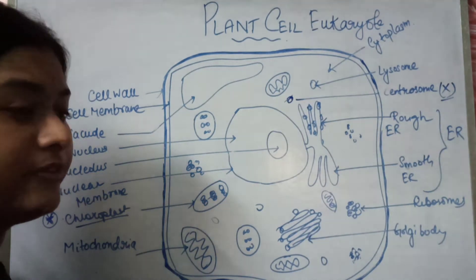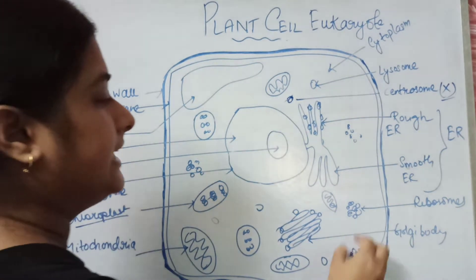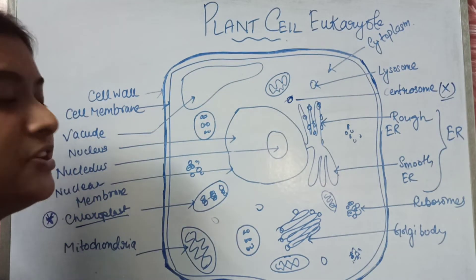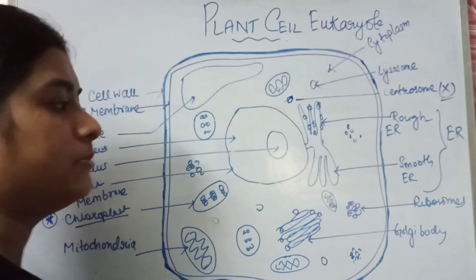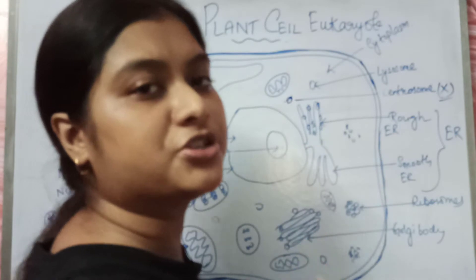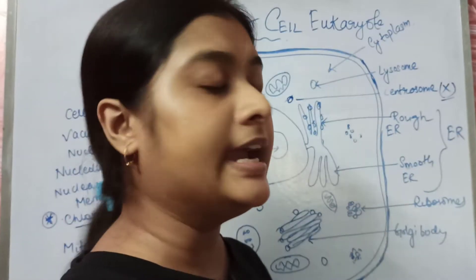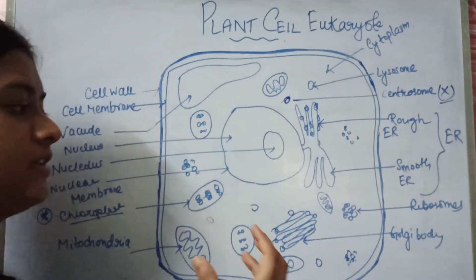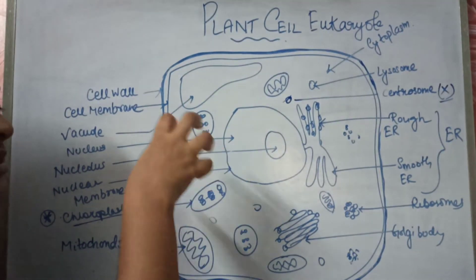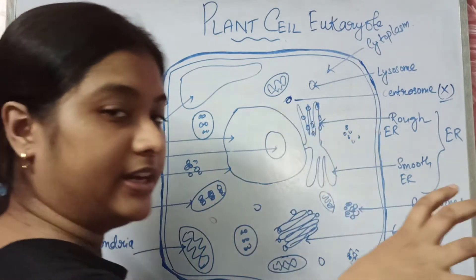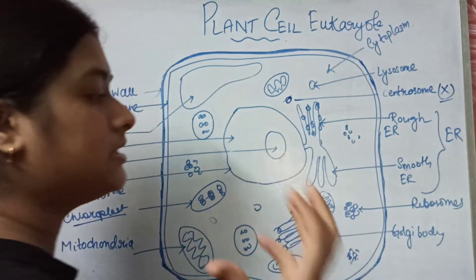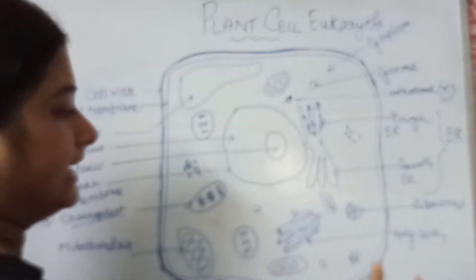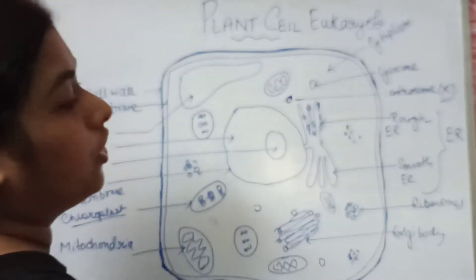Then comes the ribosomes. Ribosomes are the protein machinery of a cell — they help in the synthesis of proteins. The ribosome sits on mRNAs and helps in the formation of a protein.